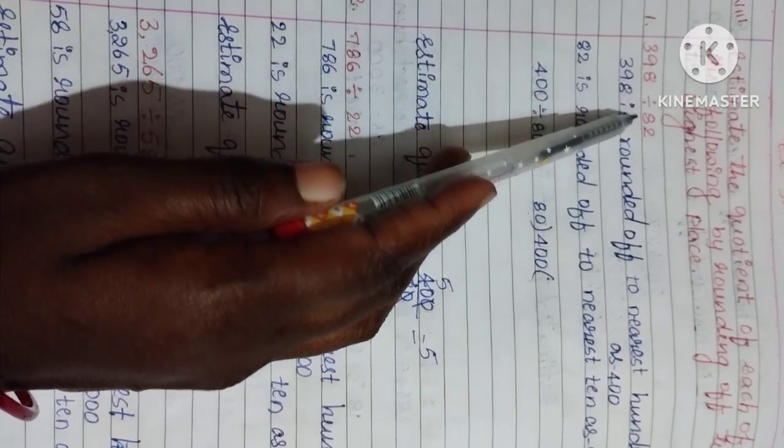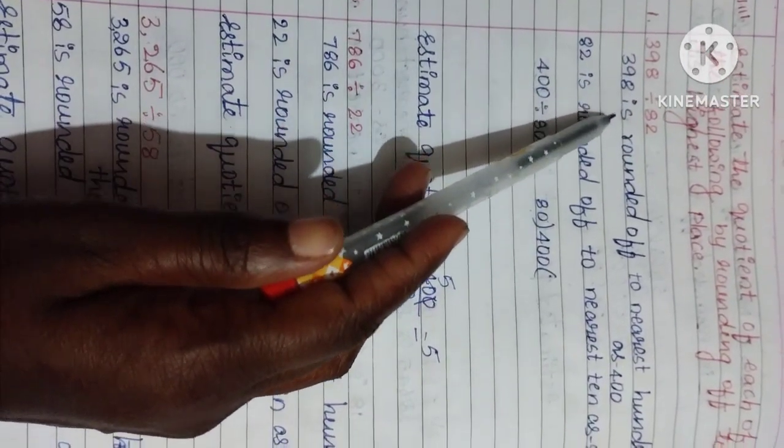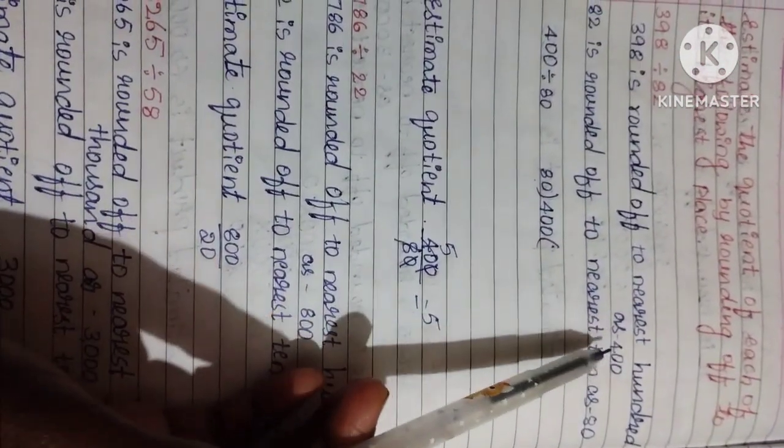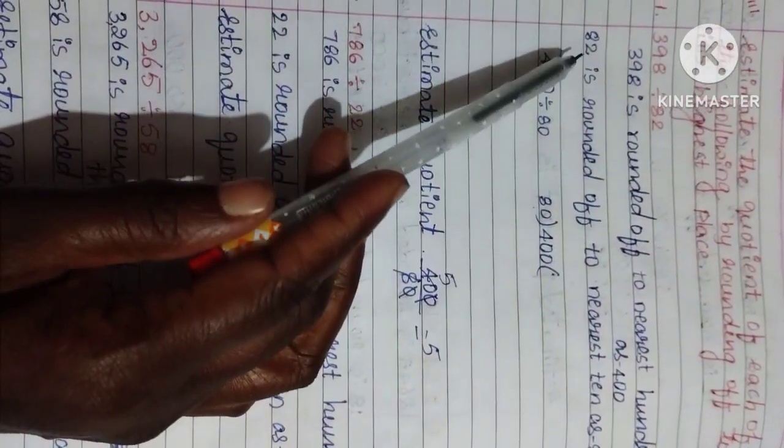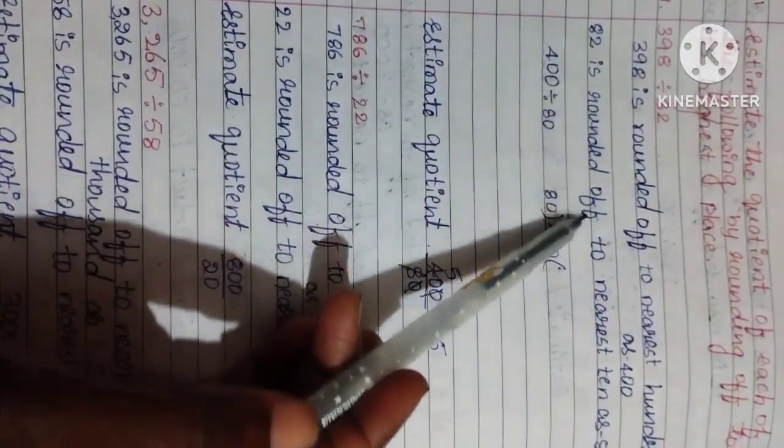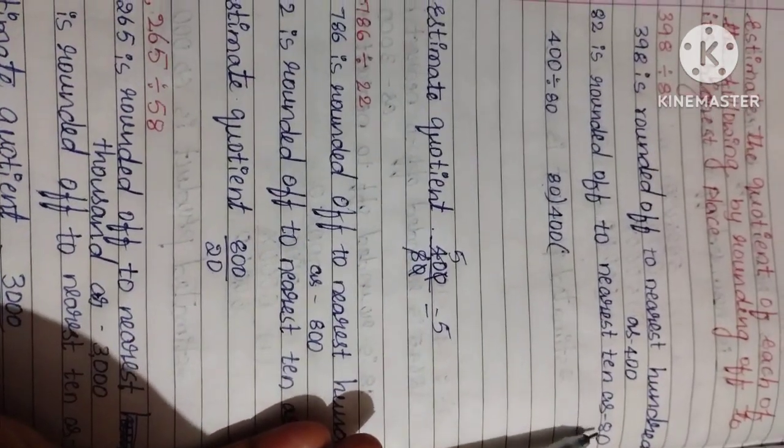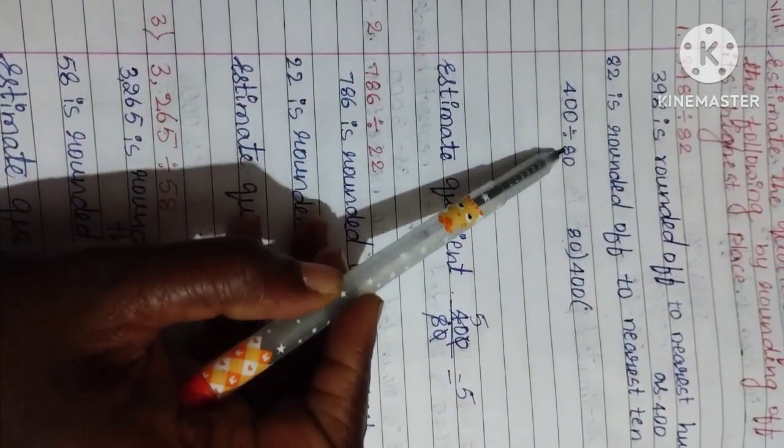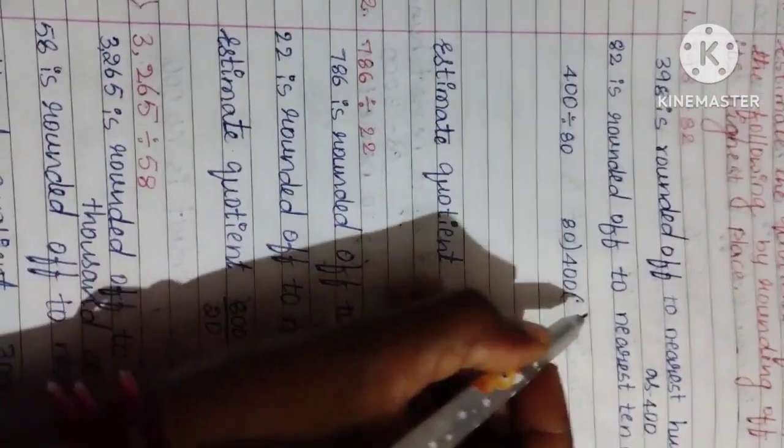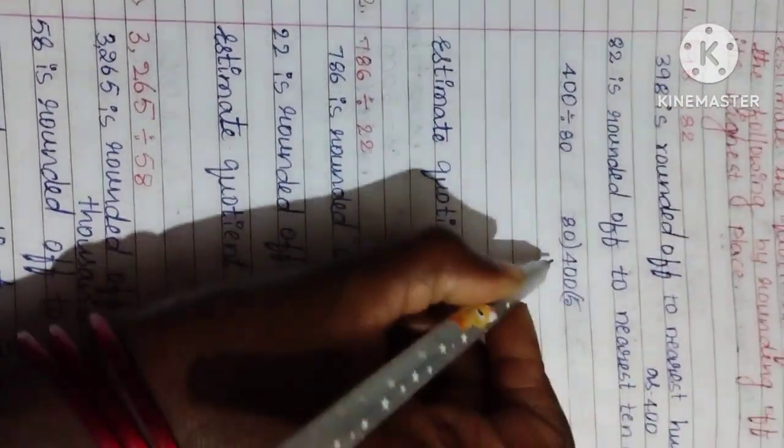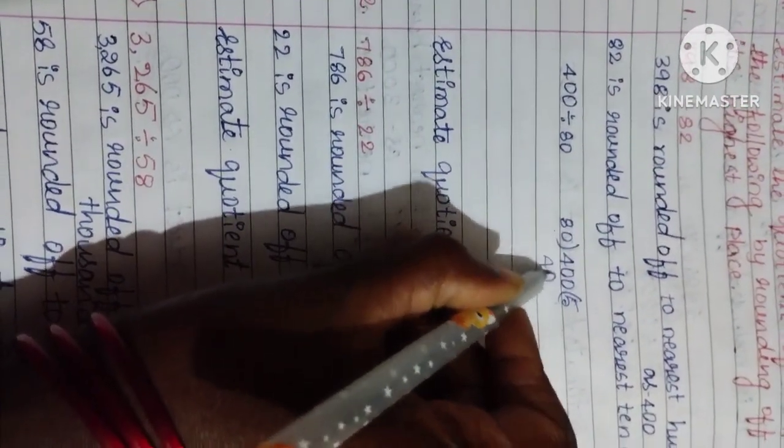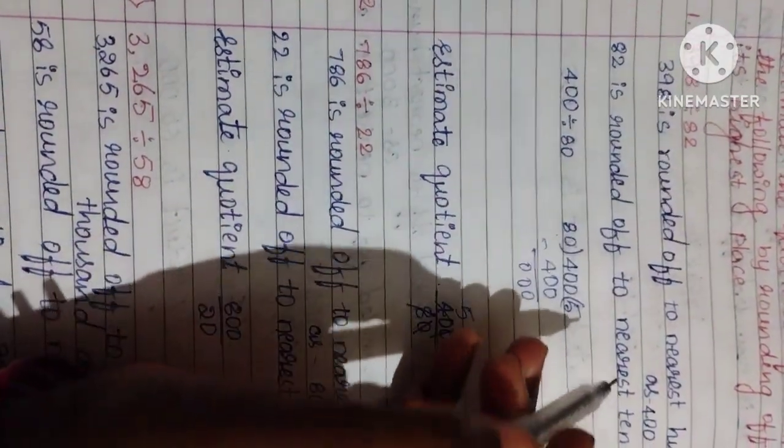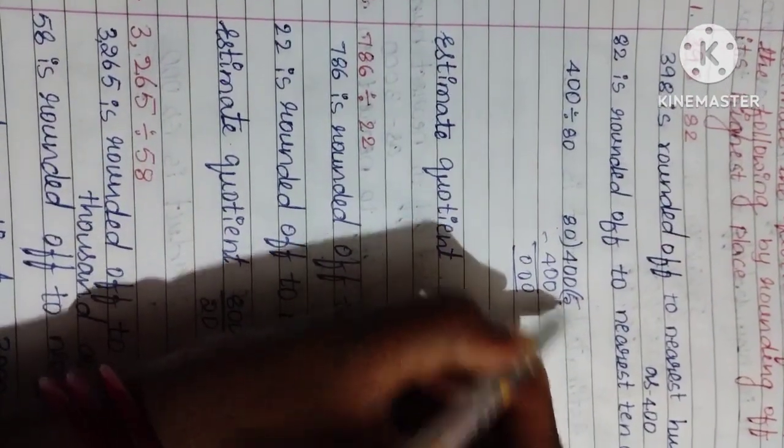Here first question: 398 divided by 82. 398 is rounded up to nearest 100 as 400. Now 82 is rounded up to nearest 10 as 80. We can do now 400 divided by 80. Now 8 fives are 40. This is one method.